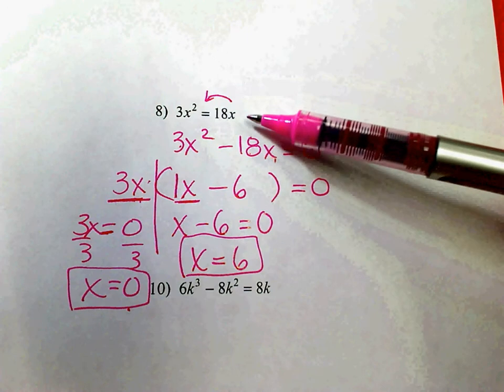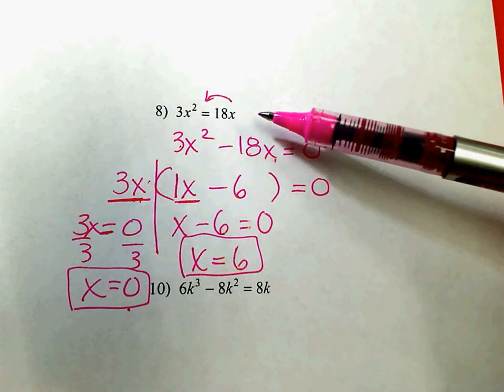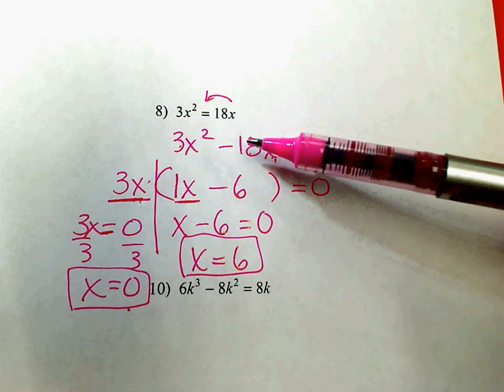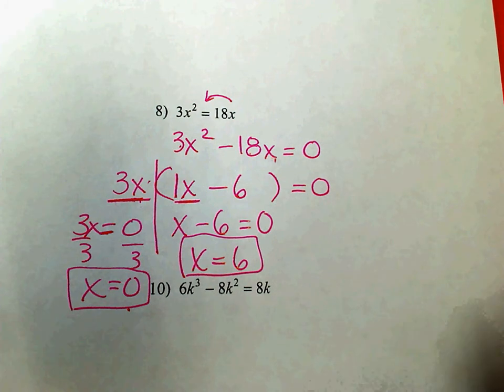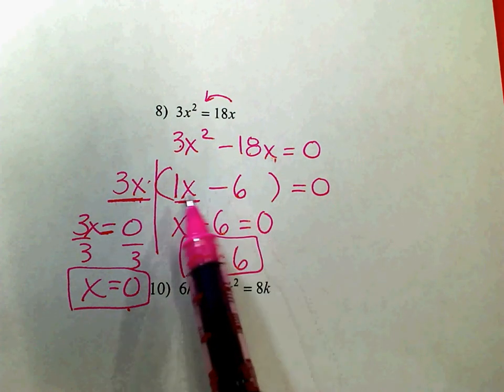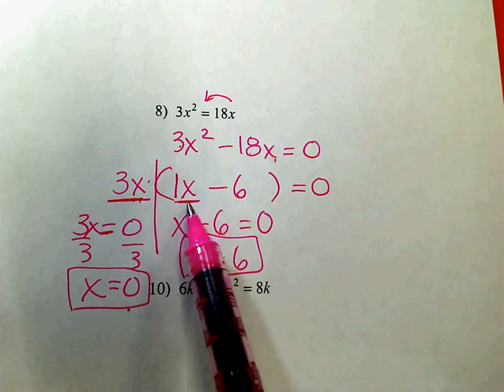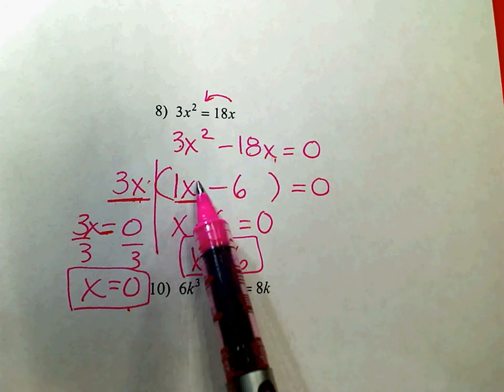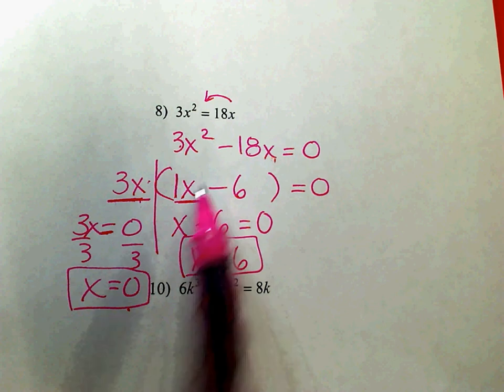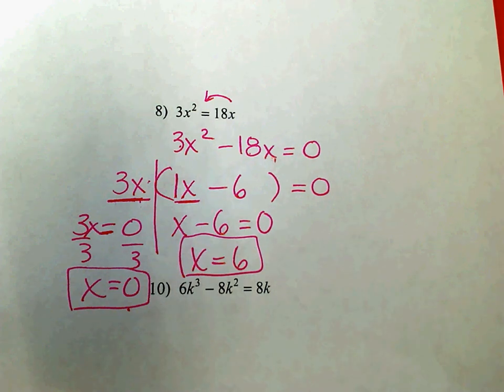This problem is actually the easier type because you don't have to worry about factoring and getting a middle term. But it seems like more people are missing it because they're trying to factor this. So again, the reason this doesn't factor is because this x does not have an even exponent. So there's nothing else I can do with it. You need to try problem number 8 on your worksheet on your own.